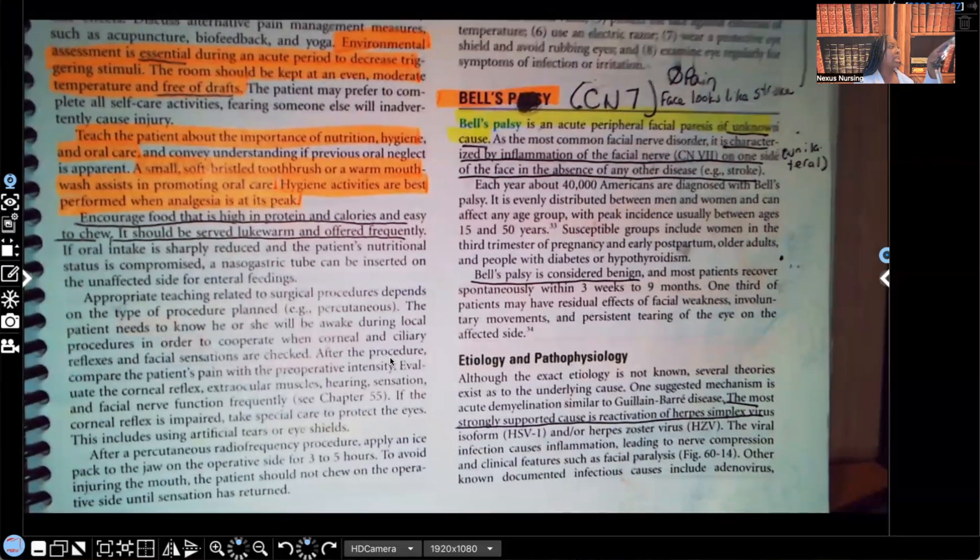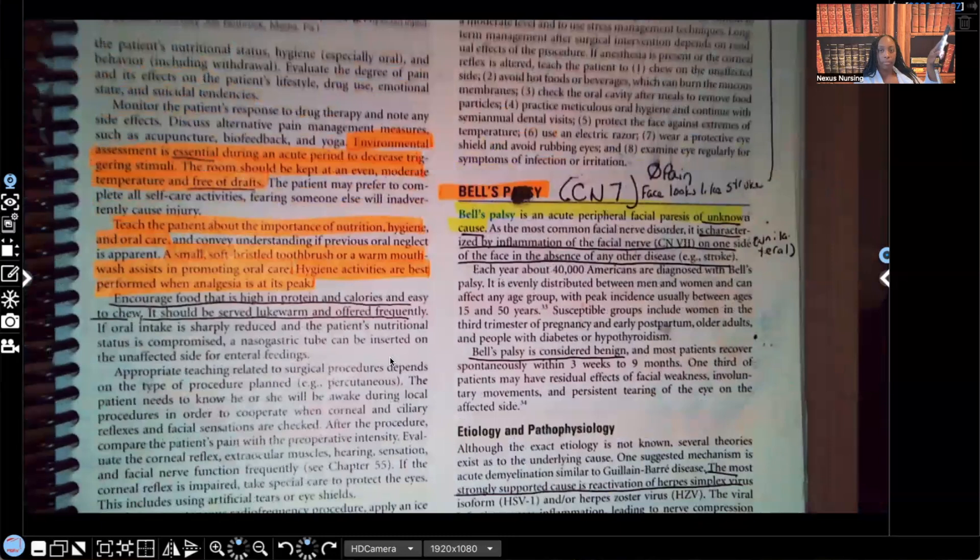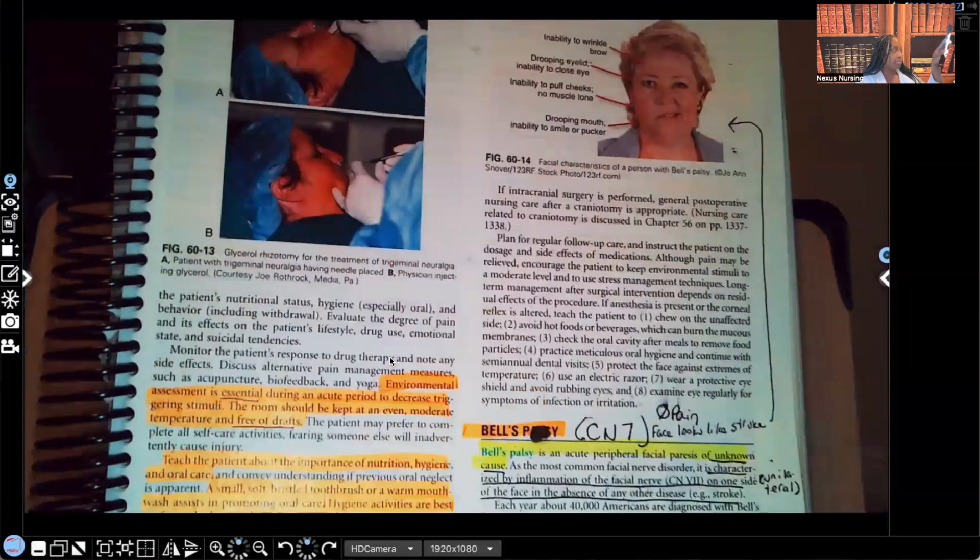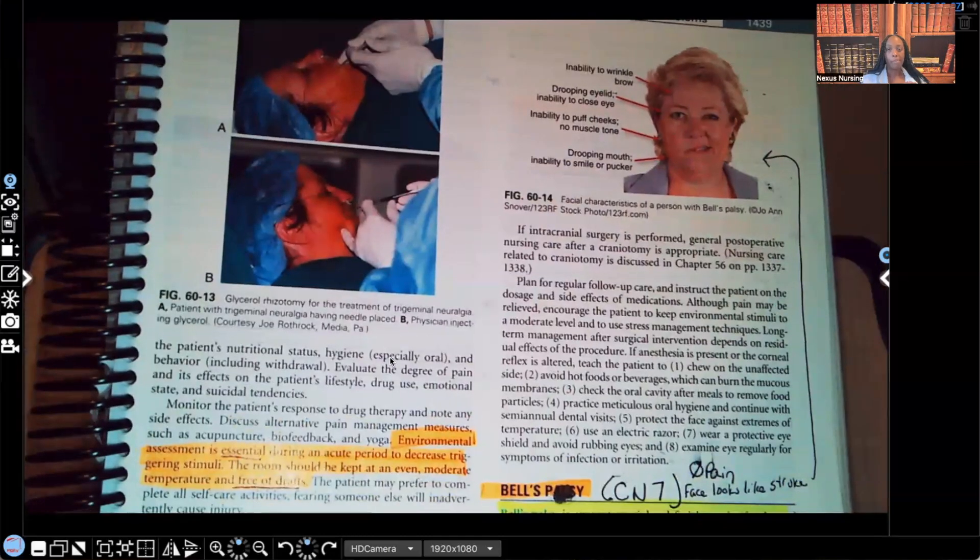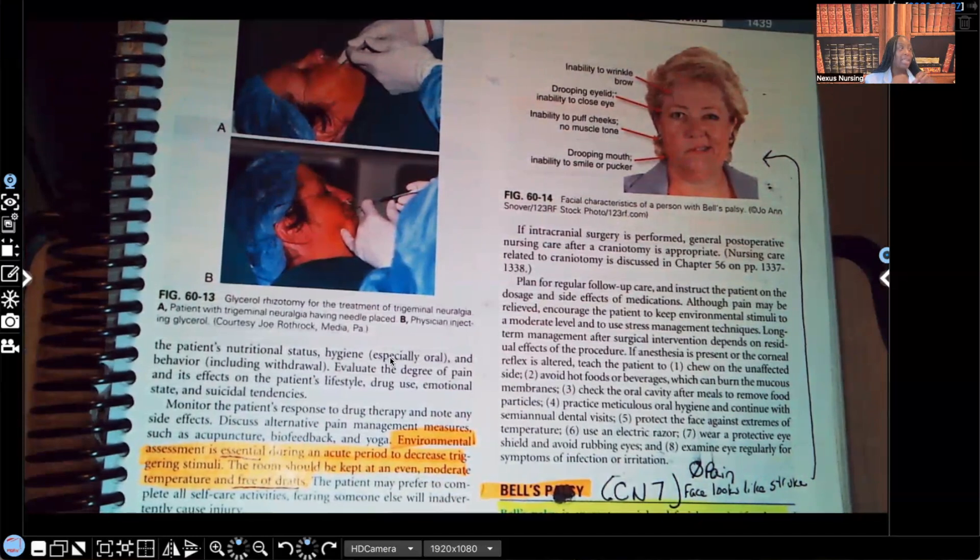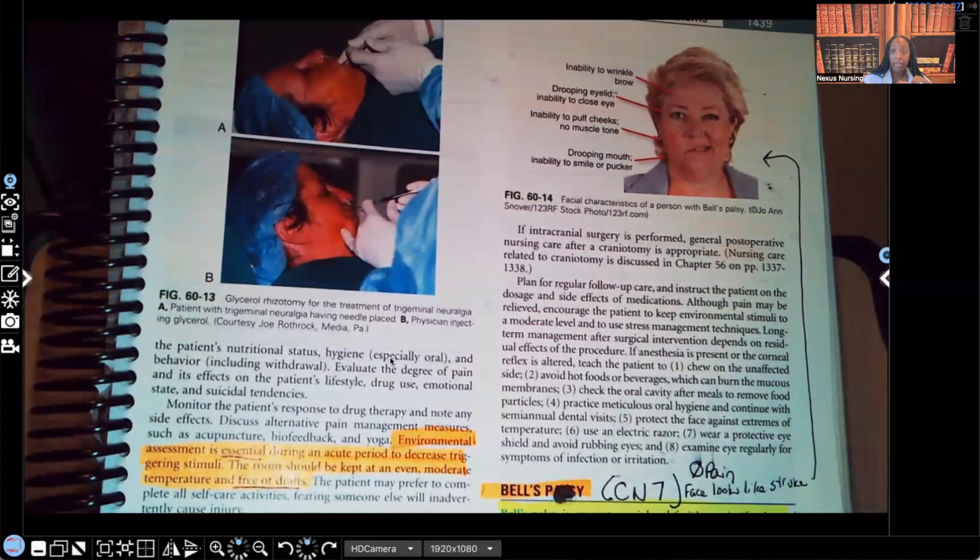But the thing is, in stroke, if the patient had a stroke, that has to do with what? The brain, right? Patient may have an aneurysm. They had a weakness in that vessel. But in Bell's Palsy, that's not what we're talking about. We're talking about cranial nerve 7, two different things. So the patient may share characteristics of someone who had a stroke, but it's not the same disorder. They're completely different. Take a look, guys.